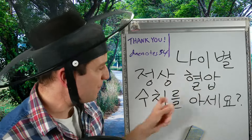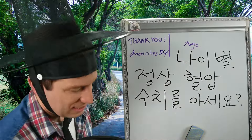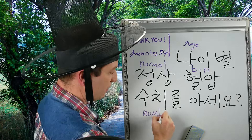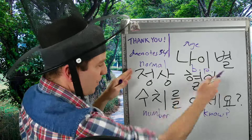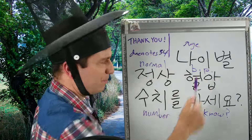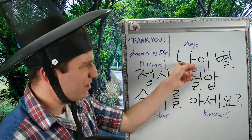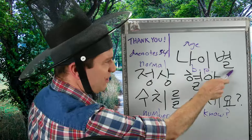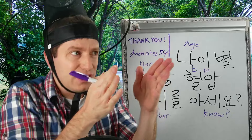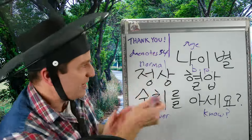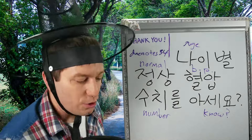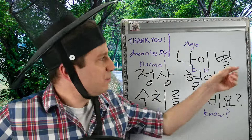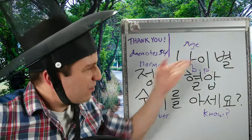나이별 정상 혈압 수치 아세요? 나이 is age. 정상 is normal. 혈압 is blood pressure. 수치 is a number or figure. 아세요 means do you know? 정상 혈압 수치 is one compound noun — the normal blood pressure number. Now we add 나이별 — by age. So it's not being used as an adverb here; you're simply knowing this noun: the normal blood pressure number by age. Do you know the normal blood pressure number for each age? This is the kind of situation where you'll see 별 used instead of 별로 — when it's used before another noun to make a compound noun.